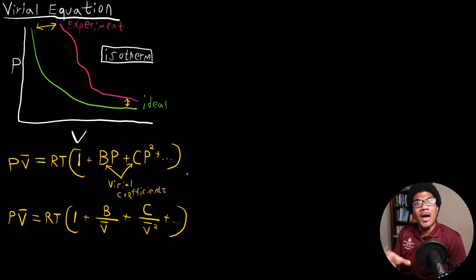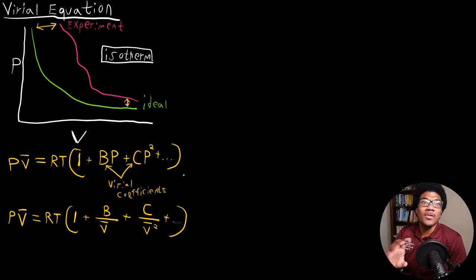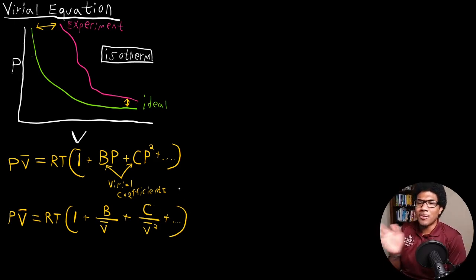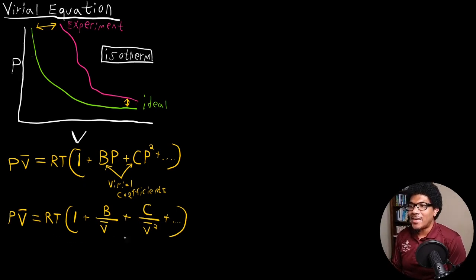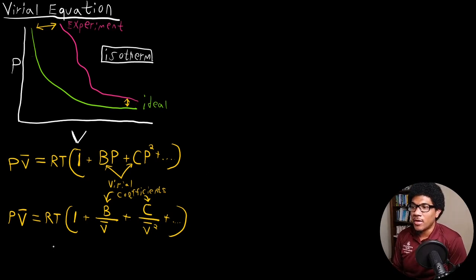Usually if the model is a good enough first approximation, you only have to include first or second order expansion terms to account for what it neglects. If you have to include a lot of higher order terms, then you're probably not starting from a good first approximation. So this is the idea of the virial equation in a nutshell. The B and C you see here are the same virial coefficients.